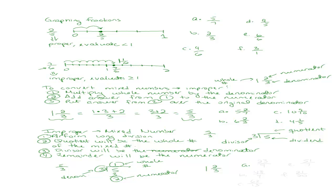Here are some examples for you to practice. Go ahead and convert 23 over 9, 48 over 4, 62 over 13, 51 over 7, and 21 over 20 to mixed numbers.